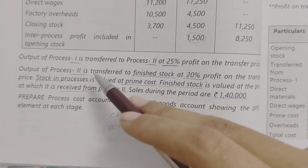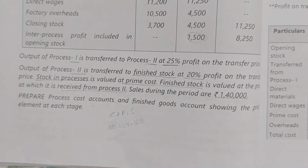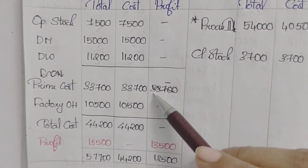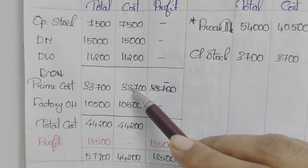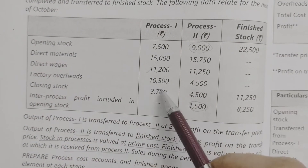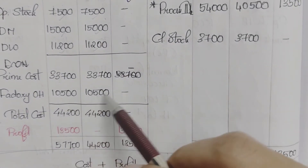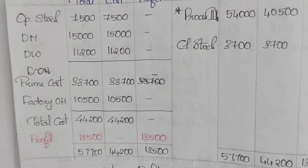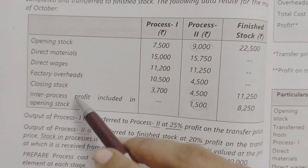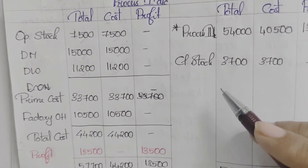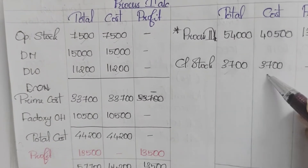Stock in process is valued at prime cost. Closing stock in Process 2 will be valued at prime cost. Prime cost includes factory overhead of 10,500 added to give total cost of 44,200. Closing stock is 3,700 on the credit side, recorded in total and cost columns.